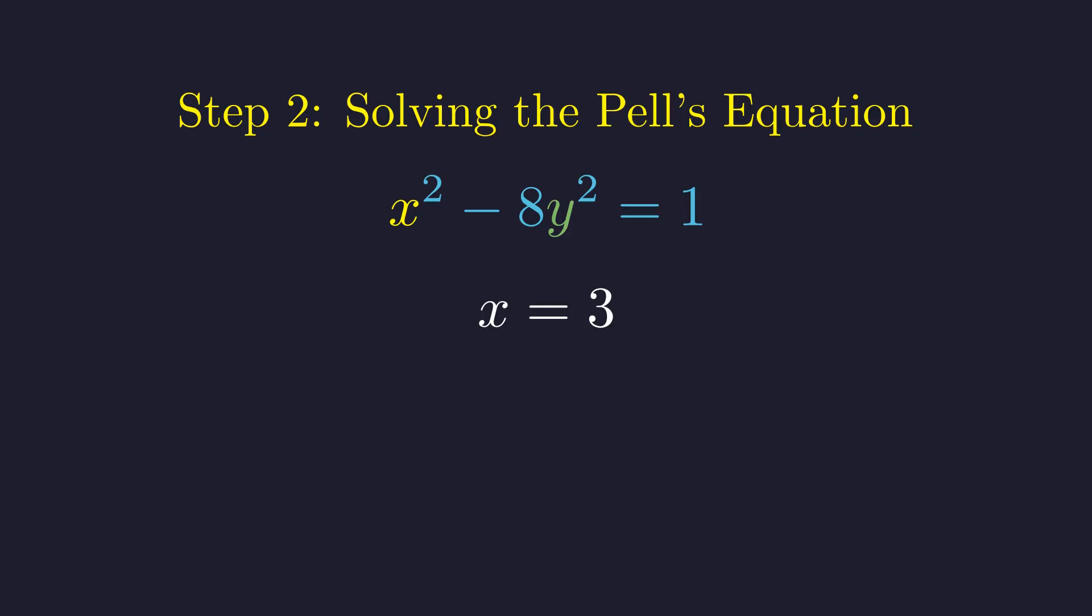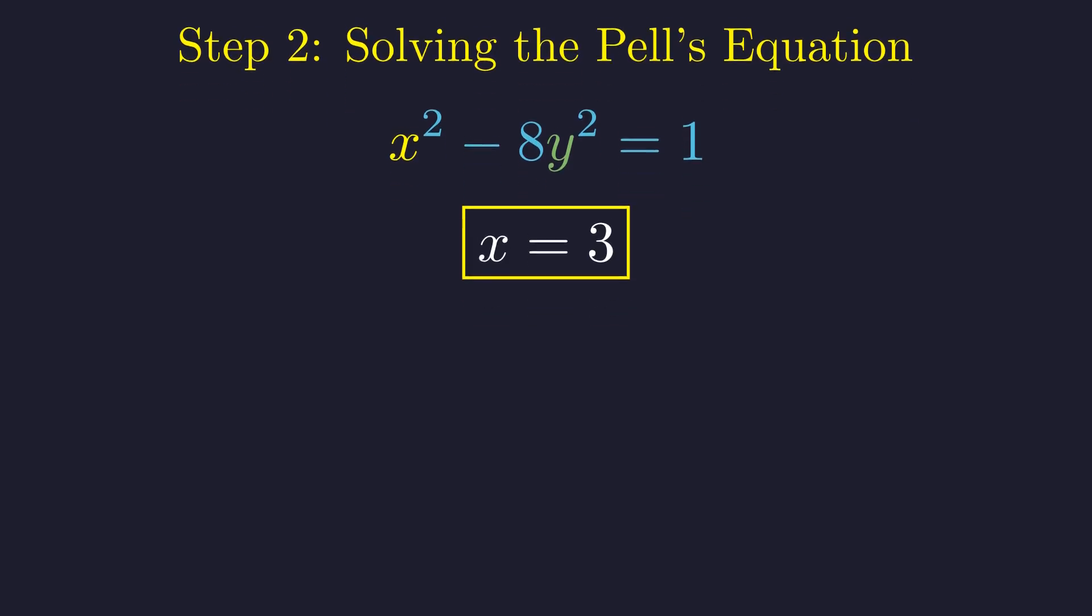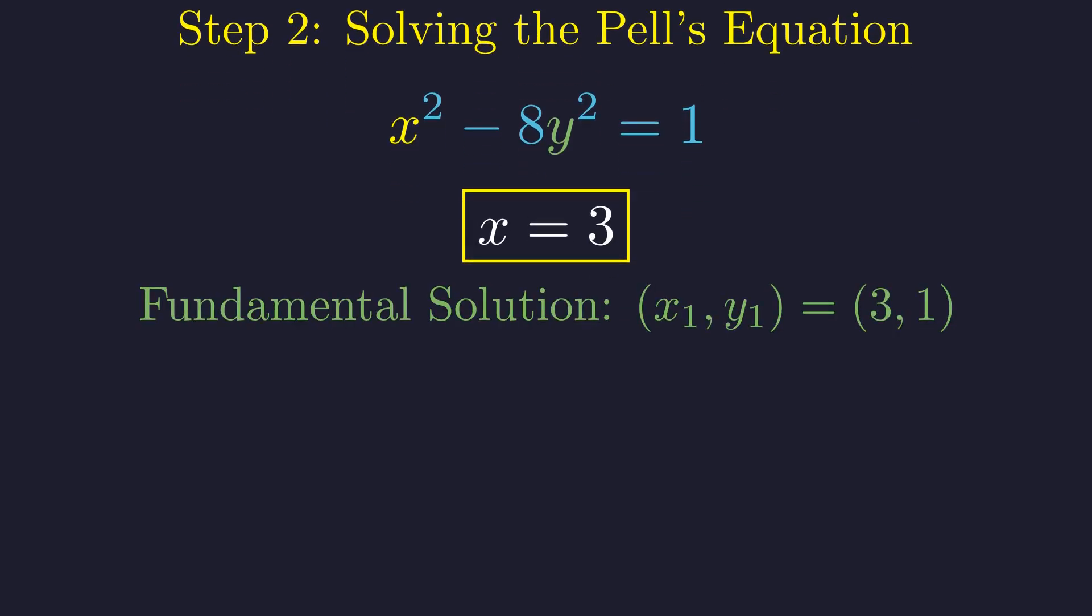Our fundamental solution is x equals 3, y equals 1. Because this is the solution with the smallest positive x greater than 1, we call it the fundamental solution. All other positive integer solutions can be generated from this one.